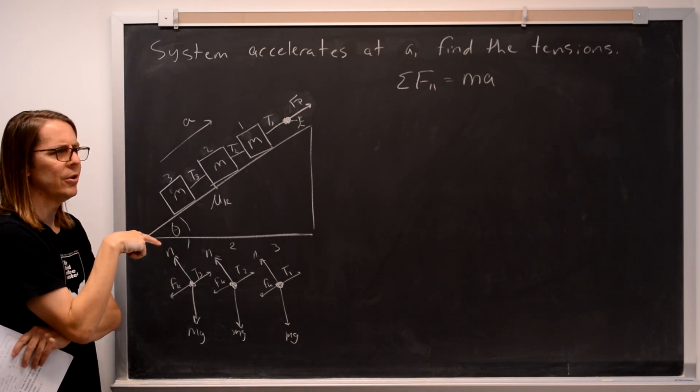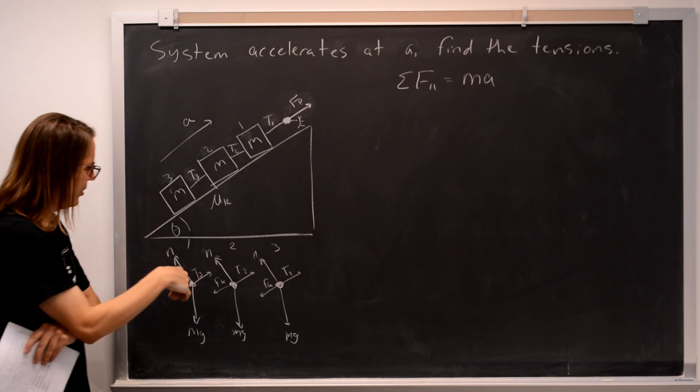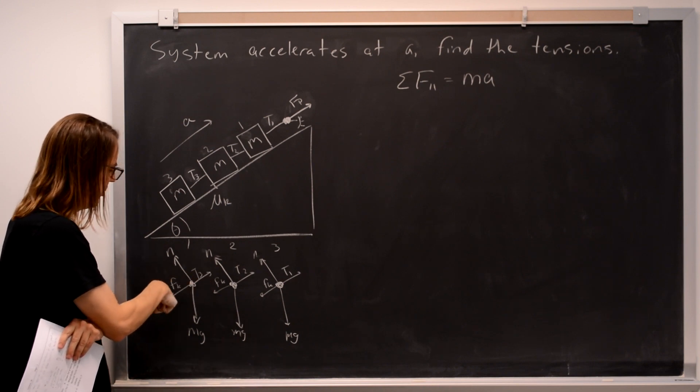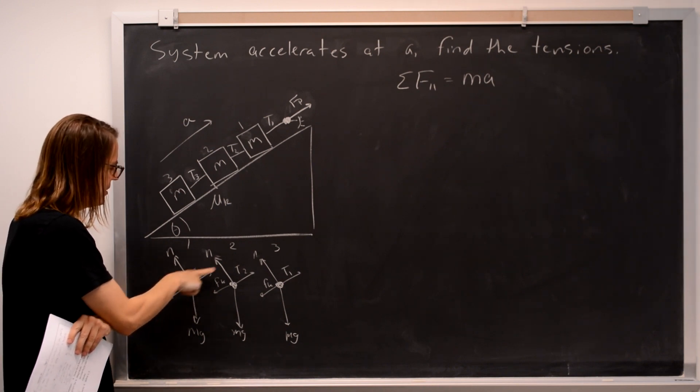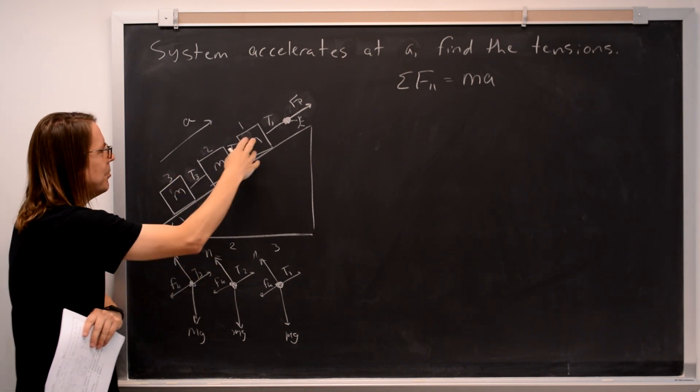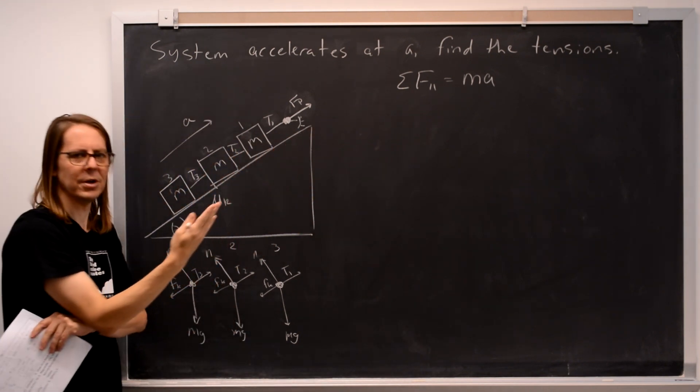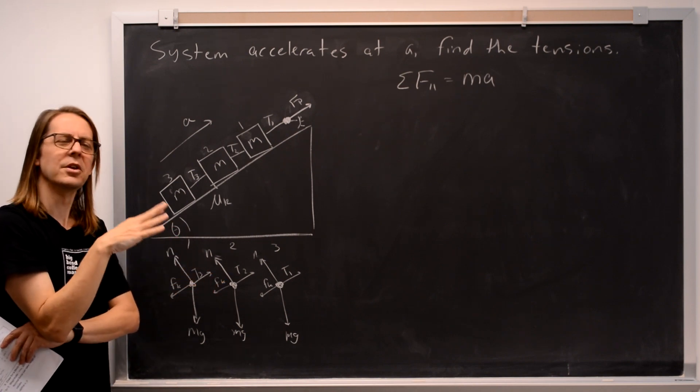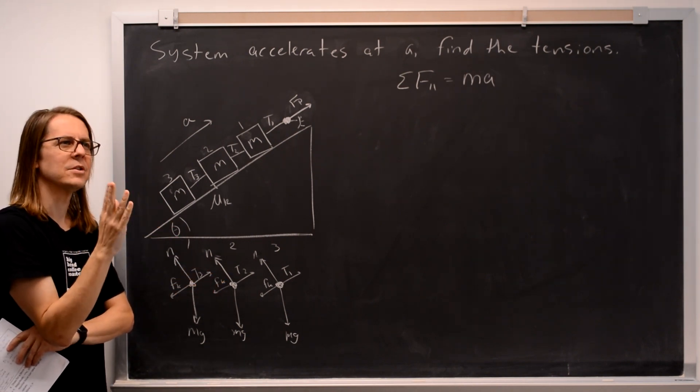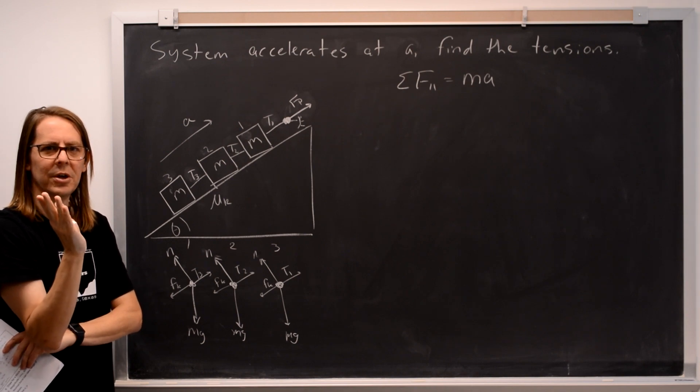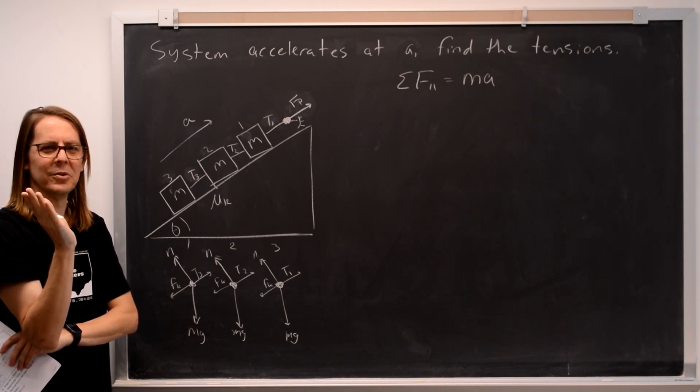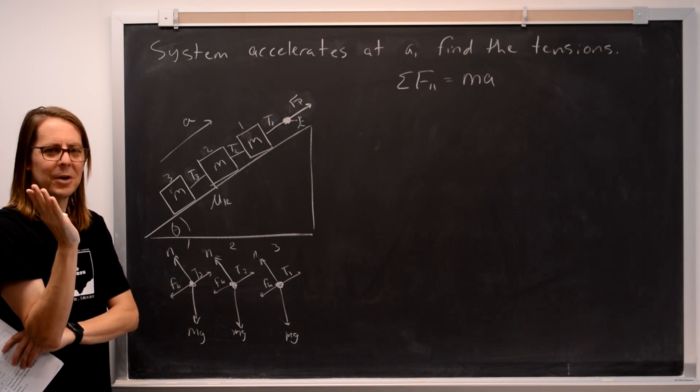And you might look at it and conclude all the tensions are the same. Because for each one, Fk pulling back is the same. Mg component pulling back is the same. Each have a tension pulling this way. They each have the same mass, and they're each going at the same acceleration. So that would sound like the tensions are the same. That's the initial sort of usual reaction, except we left out some forces. So see, hit pause. Can you think of what forces we left out? Maybe it was obvious to you.